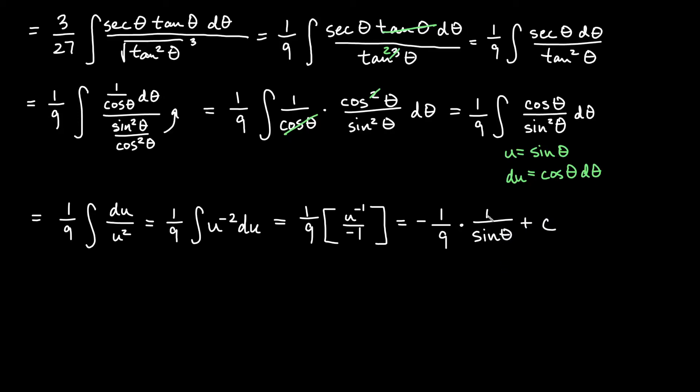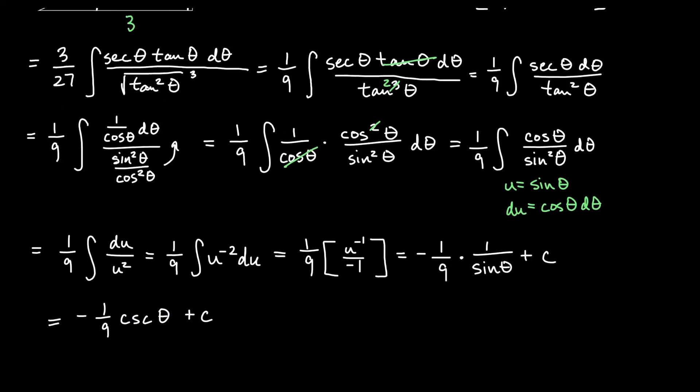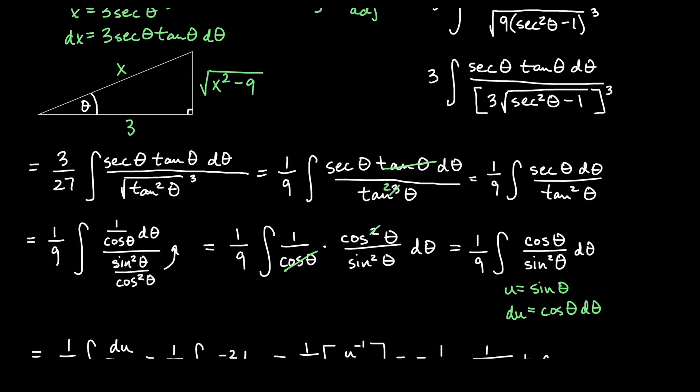And then we could go ahead and maybe change the reciprocal of sine. Let's say negative 1 over 9 cosecant of theta plus c. And now I simply need to replace my cosecant of theta. So I'm going to go back up to my right triangle here and figure out what cosecant of theta is.